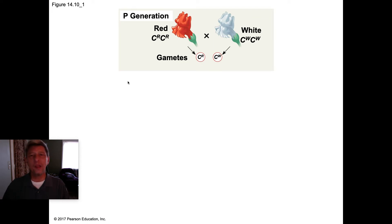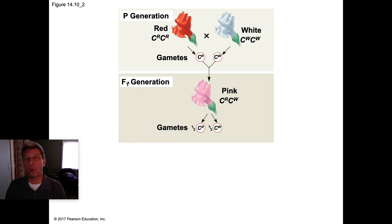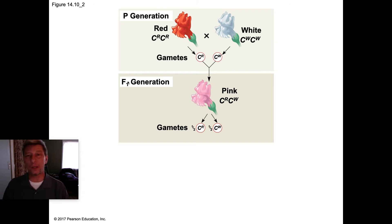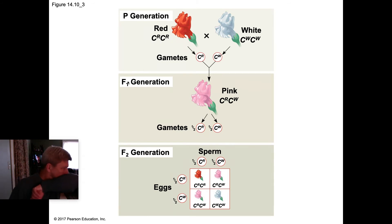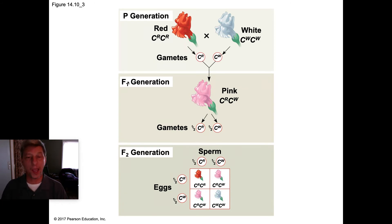Here's an example of incomplete dominance. We have two flowers of the same species, but their genes come in two different allele types. Both alleles are dominant, so when you produce an F1 generation you end up with a pink flower — the red and the white give rise to pink, but neither gene is gone; they're still there. Looking at the F2 generation produced by the F1 hybrids, you end up with one red flower, two pink flowers, and one white flower — a 1:2:1 phenotypic and genotypic ratio.